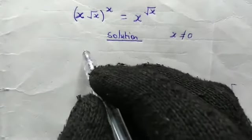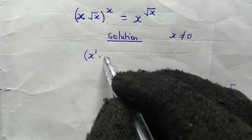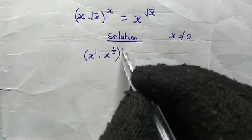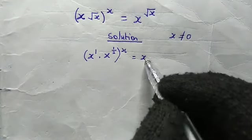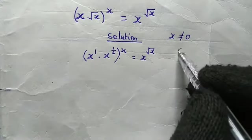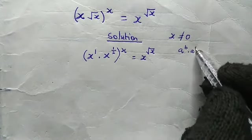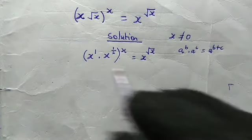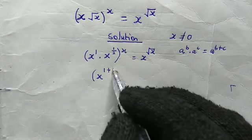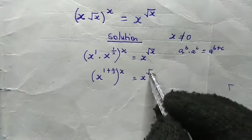For this bracket here, we have x to the power of 1, multiplied by root x, which is the same as x to the power of 1 over 2, then raised to the power of x. This is equal to x to the power of square root of x. Using the property a^b times a^c equals a^(b+c), inside the bracket we have x to the power of 1 plus 1 over 2, then raised to the power of x, equal to x to the power of root x.